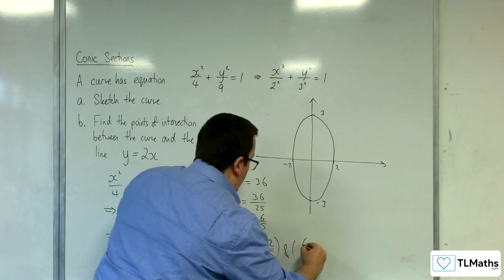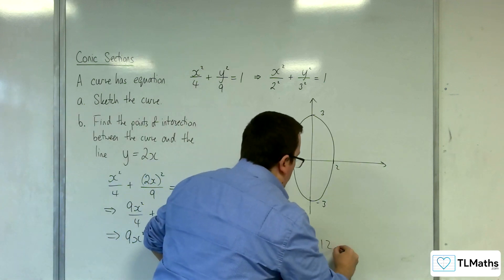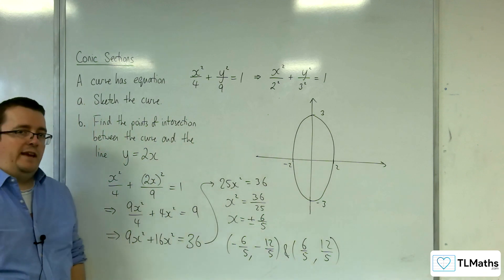And when x is 6 fifths, we've got 2 lots of 6 fifths, which is 12 fifths. And so these are the two points of intersection.